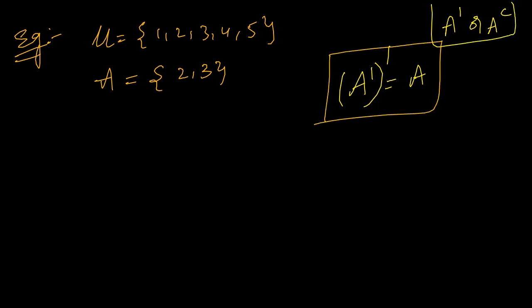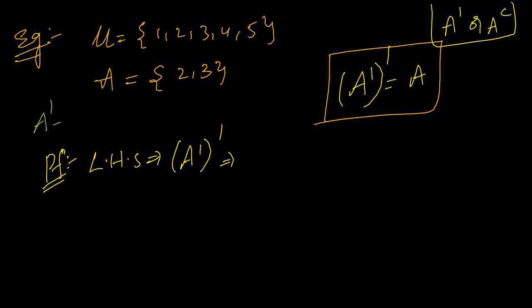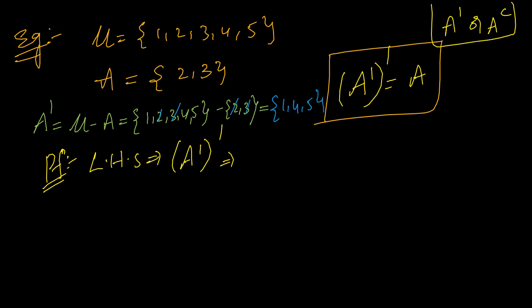For proving this, let us show left hand side equals right hand side. LHS is A complement whole complement. What is the meaning of A complement? A complement is nothing but universal set minus A. Universal set is {1, 2, 3, 4, 5} minus {2, 3}. We need to remove the common terms and take elements left over in the first set, which is nothing but {1, 4, 5}. This is A complement.